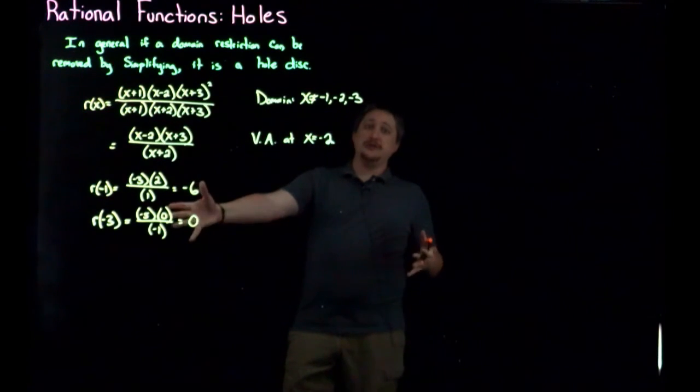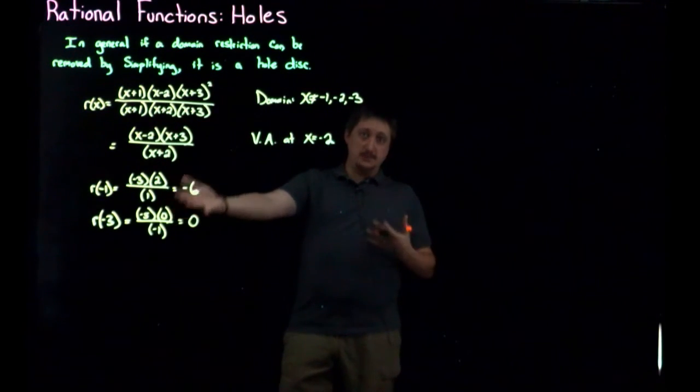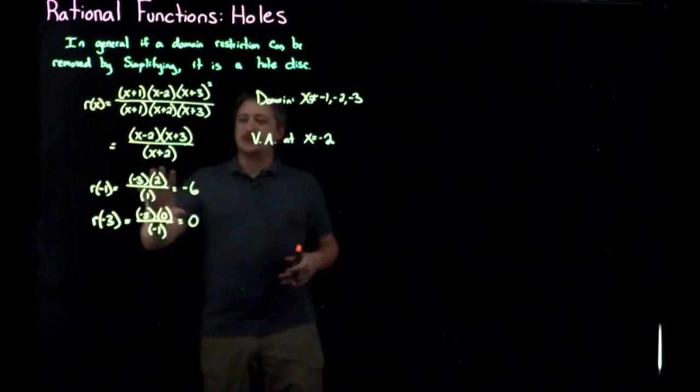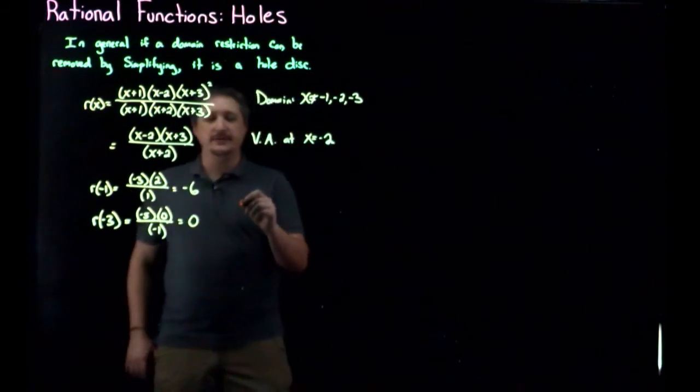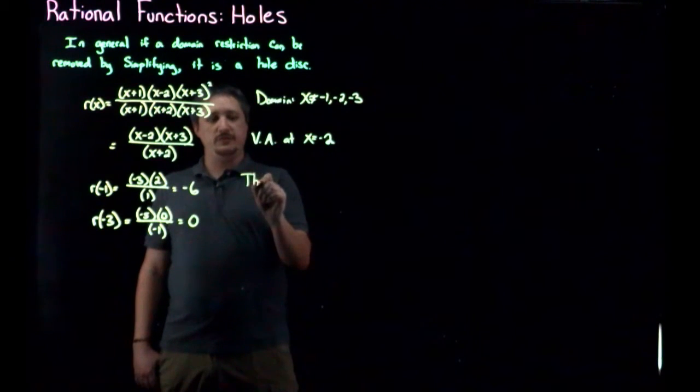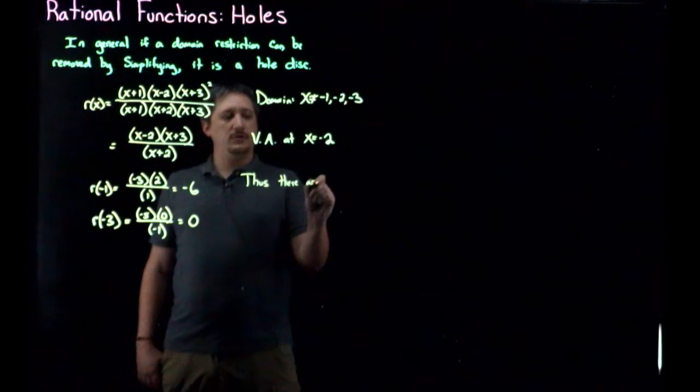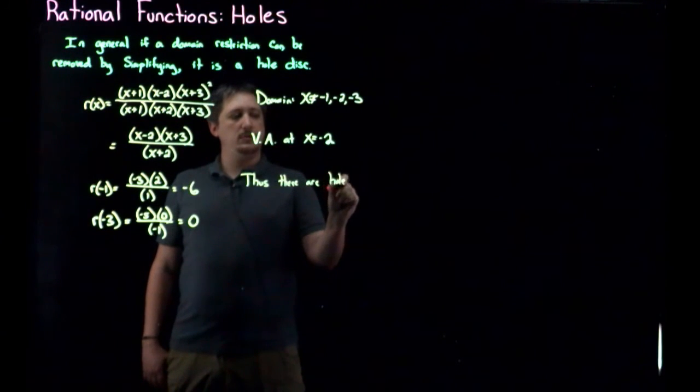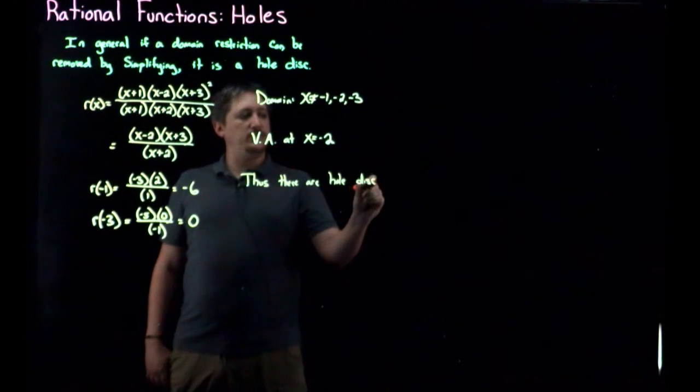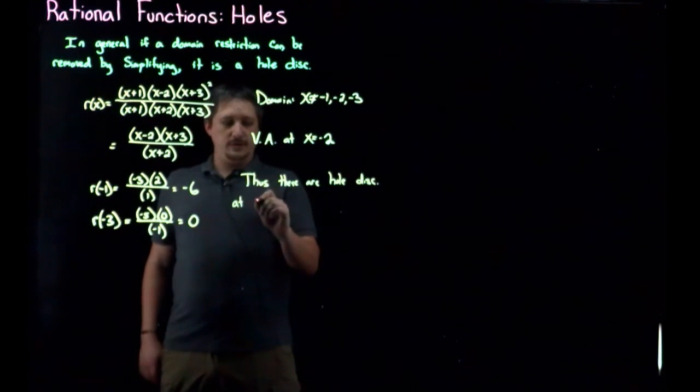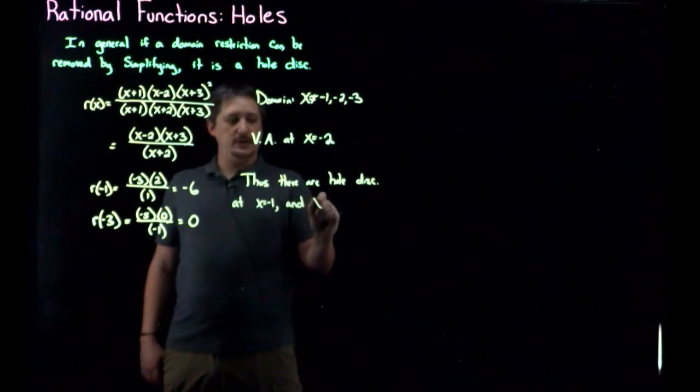So since it worked in the sense that I got a nice number, there was no dividing by zero or craziness, that tells me that these are holes and thus, so let me write first, thus